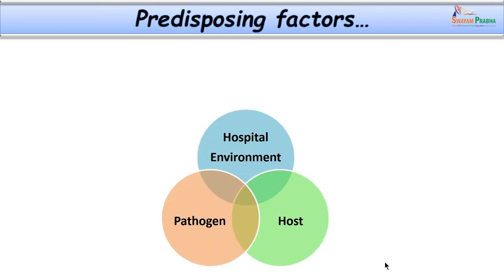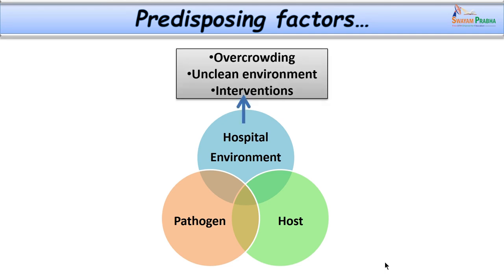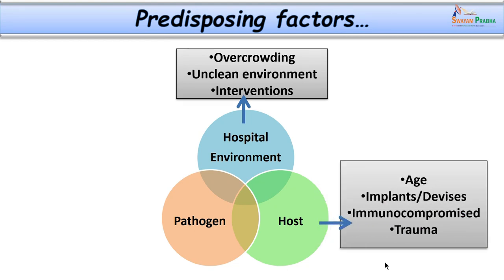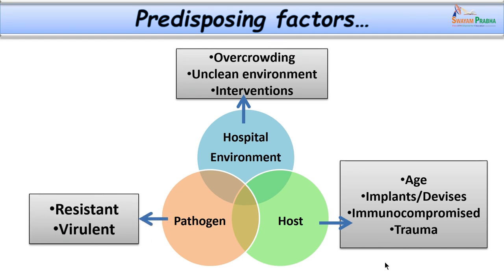Not everyone admitted to hospital develops an infection. Predisposing factors include hospital factors such as overcrowding and unclean environments; patient factors such as extremes of age, implants or devices like catheters, immunocompromised status, and multiple trauma; and pathogen factors such as high virulence, multidrug resistance, pan resistance, or superbug characteristics.